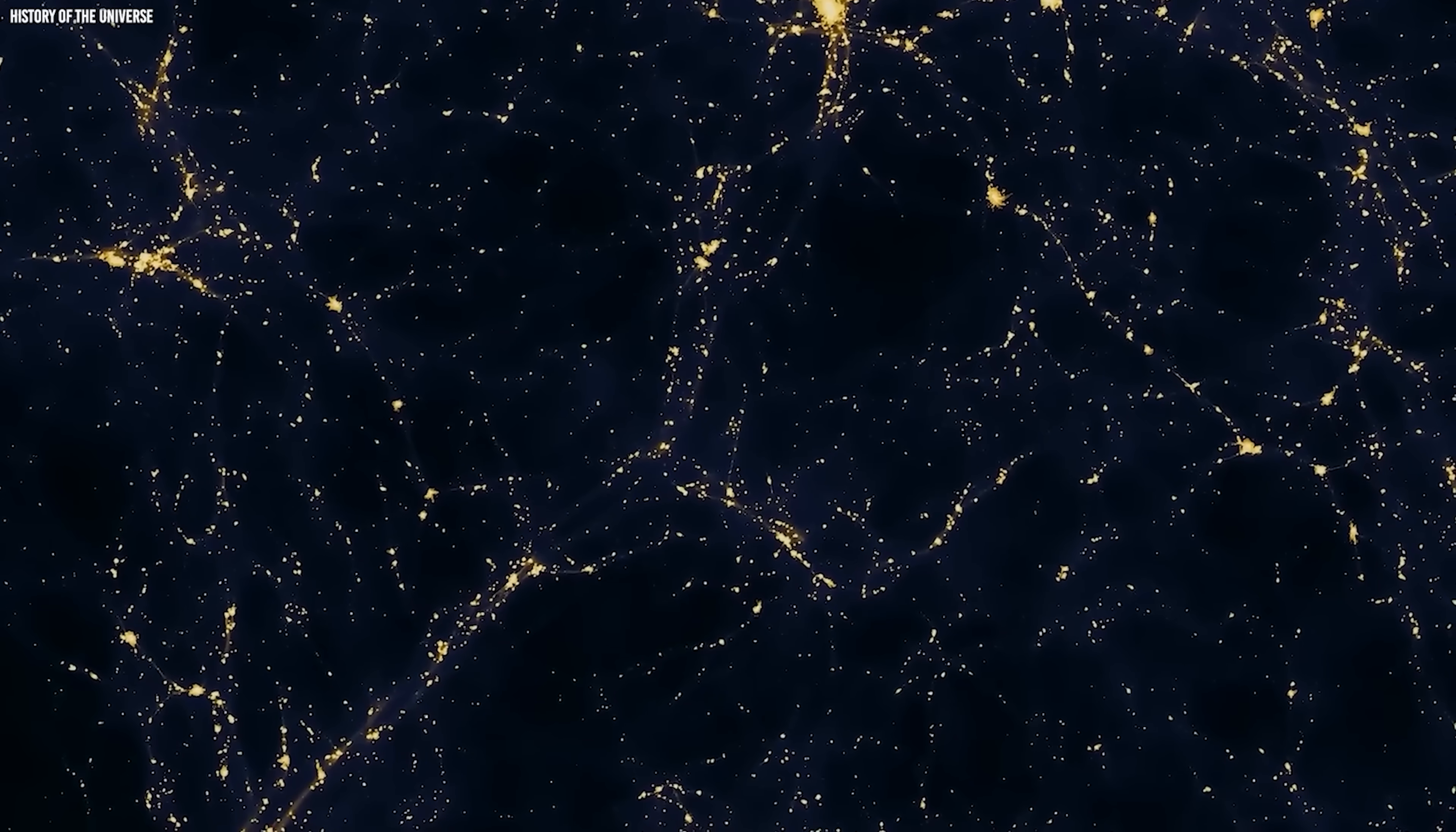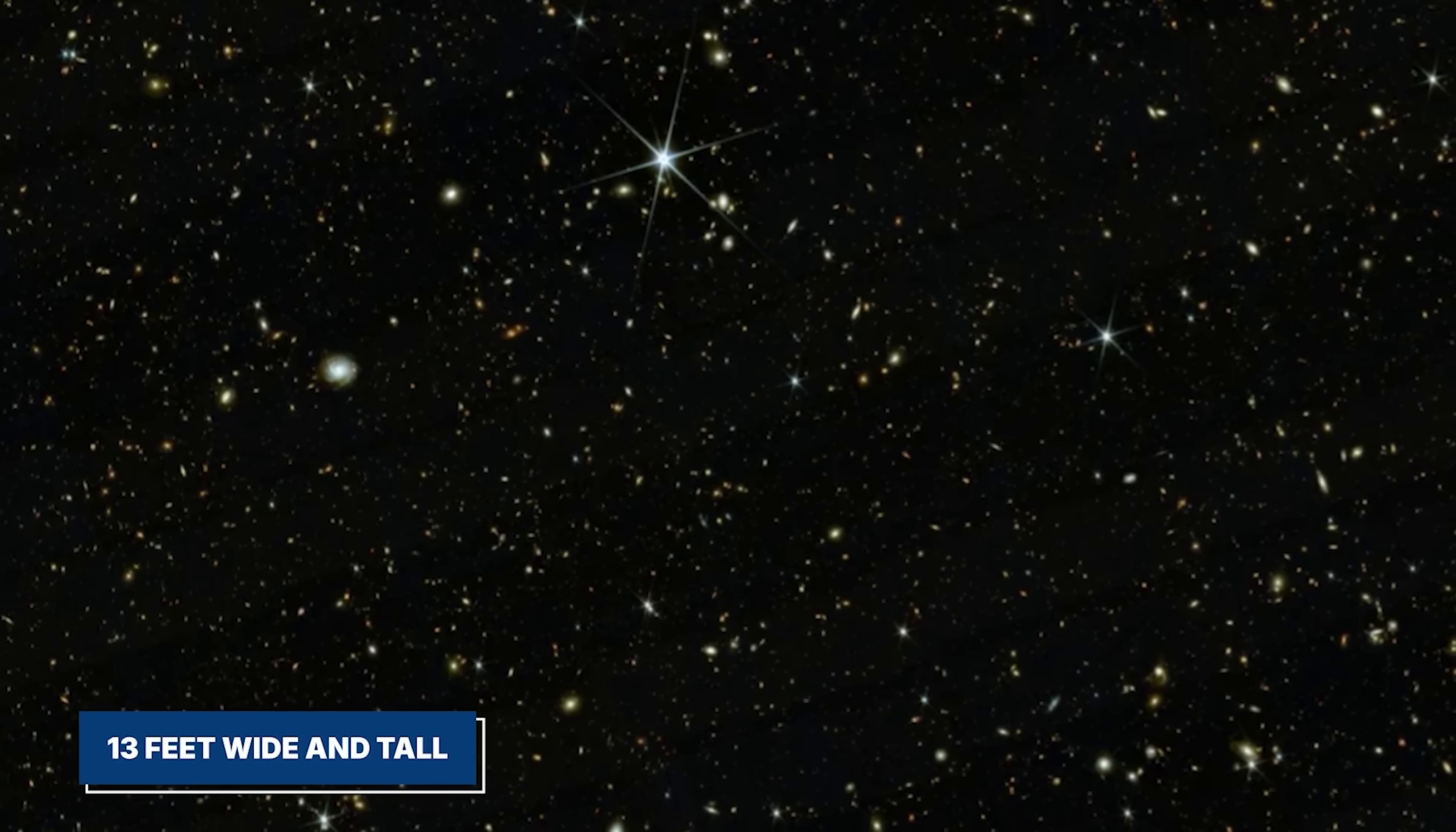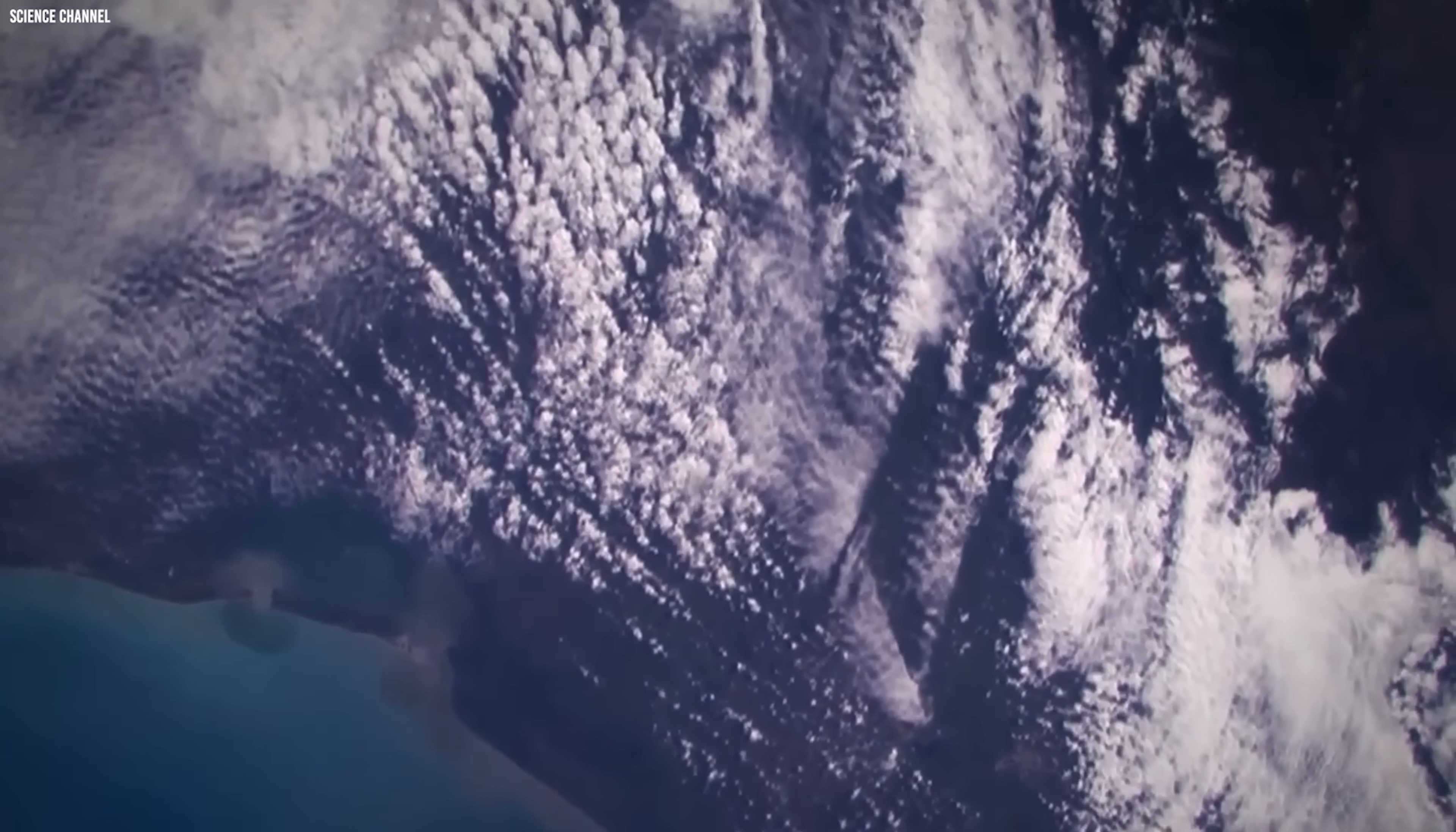To understand the scale of this leap, imagine printing the famous Hubble Ultra Deep Field on a normal sheet of paper. At the same resolution, Webb's Cosmosweb map would become a mural more than 13 feet wide and tall. It's the difference between knowing one neighborhood and suddenly seeing an entire world. A transformation as profound as seeing the whole Earth after only knowing a single city.